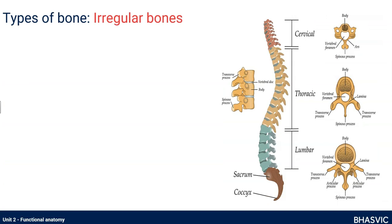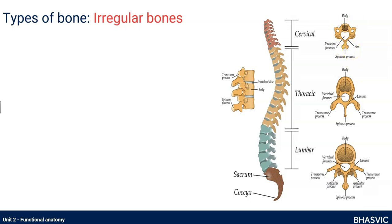Irregular bones are a little bit different in that there's no set pattern to their shape. The best example — and really the only one you need to learn — are vertebrae. Your vertebral column is a series of vertebral bones and each one is an irregular bone. Even within the vertebral column they are designed slightly differently: the lumbar vertebrae are the big ones at the base of your back, the thoracic vertebrae are a different shape at chest level, and the cervical vertebrae are much smaller at the top.